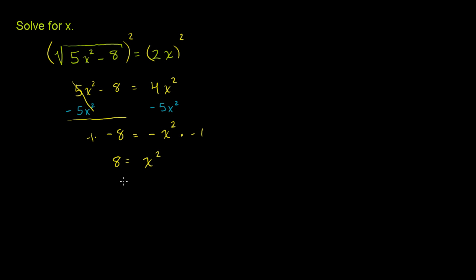And now we can take the square root of both sides of this equation. So let's take the principal square root of both sides of this equation. And what do we get? On the right-hand side, x is equal to the square root of 8, and 8 can be rewritten as 2 times 4.